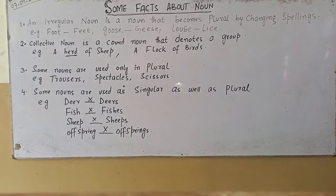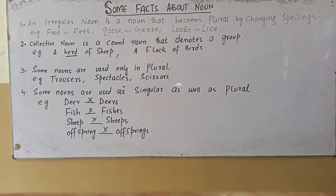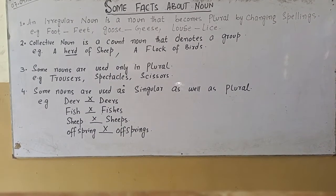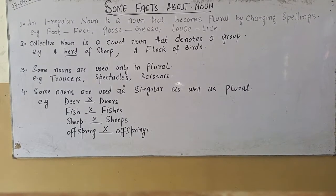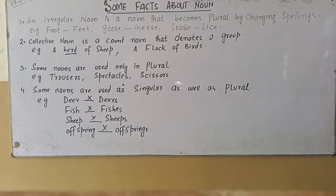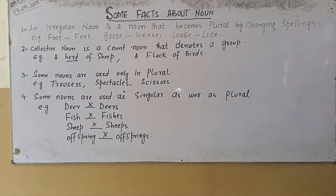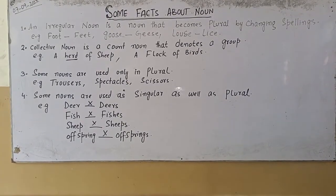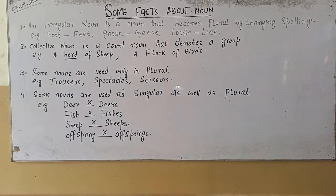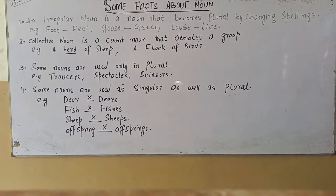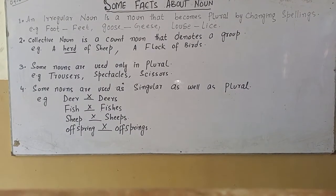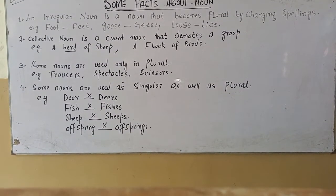Fact number two, a collective noun is a count noun that denotes a group. For example, a herd of sheep, a flock of birds, a litter of puppies, a bouquet of flowers, a swarm of meteors.